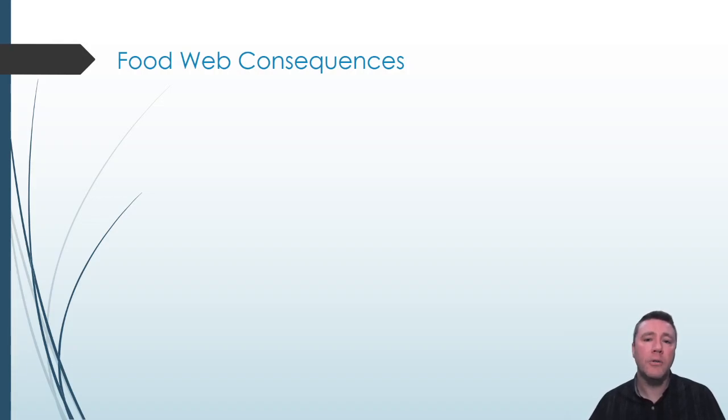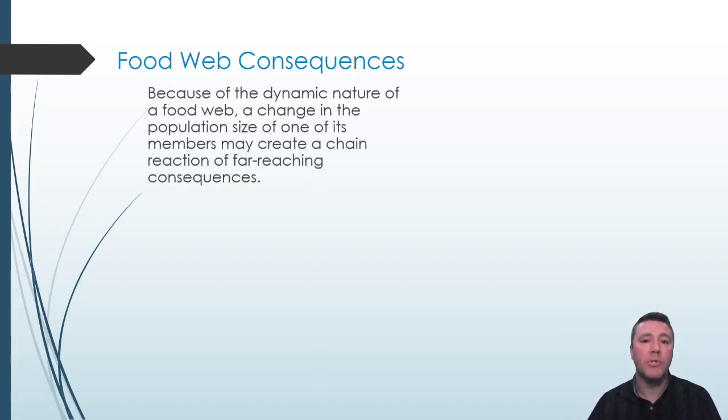When ecosystems are disrupted and individual species experience decreases or increases in population, the consequences to the rest of the food web are extensive, and it is practically impossible to make predictions about potential consequences if an organism in a food web was to experience a change in its population size or even be eliminated. But because food webs are quite complex, unexpected and unintended consequences are likely.